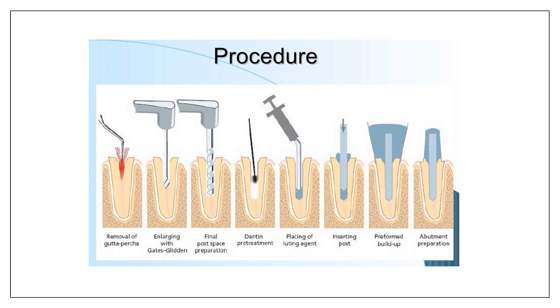This was all about the first part of the post and core system. In the next part, I will cover everything about the classification of post, which is very commonly asked in exams, as posts are available in various types with different materials and forms. The most commonly asked question in this video is about the ferrule. I hope you found this video helpful - please like, comment, share, and subscribe. Thank you.